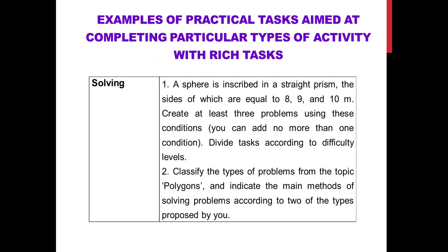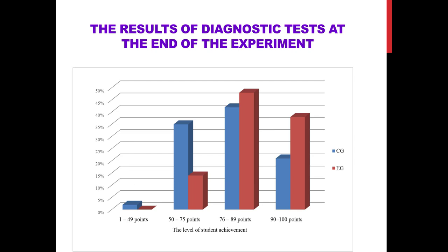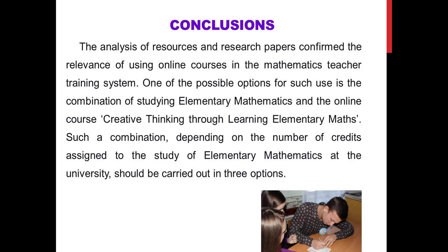The effectiveness of implementing the online course in the mathematics teacher training system was tested from February to December 2021. At the end of the experiment, students passed elementary mathematics tests consisting equally of traditional and rich tasks. To confirm that the difference between results in control and experimental groups was statistically significant, Fisher's statistical test was used.